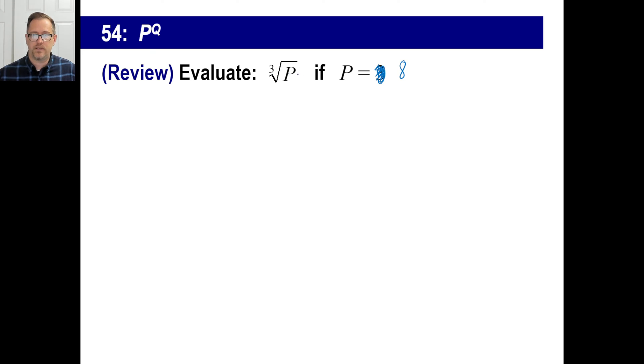What's the cube root of p if p is equal to 8? Well, that means you're just going to put in for p whatever number they say it is. Now, what's the cube root of 8? In other words, what number times itself 3 times gives you 8? And the answer is 2. Answer is 2. We've done plenty of those before.